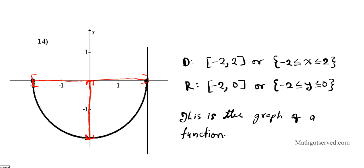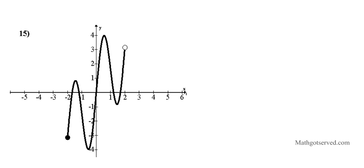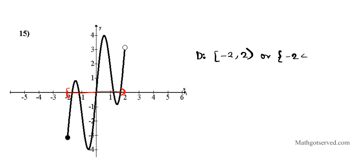Let's take a look at another example. We'll find the domain and range first. The domain is the horizontal span of the graph projected onto the x-axis. Going to the left, it reaches negative 2, included, and continues all the way to 2, but 2 is not included, so we use a parenthesis. Using interval notation with a bracket on the left, the domain is negative 2 to 2. Using inequality notation, negative 2 is less than or equal to x, and x is less than 2.